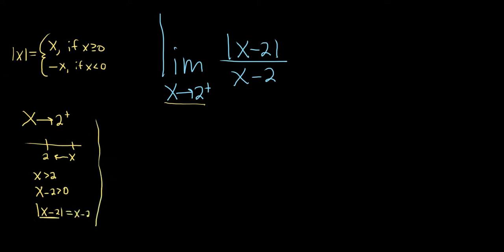If instead, let's just pretend for a moment that x was approaching 2 from the left. In that case, it would be over here, right? Approaching from the left. That would mean that x is smaller than 2. That would mean that x minus 2 is less than 0. And that would mean that the absolute value of x minus 2 would be minus x minus 2, right? Just the formula.